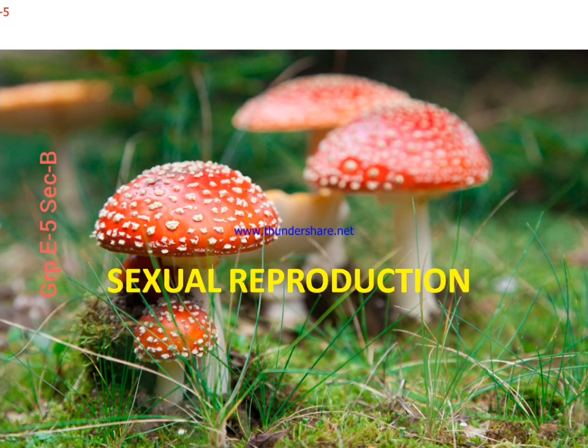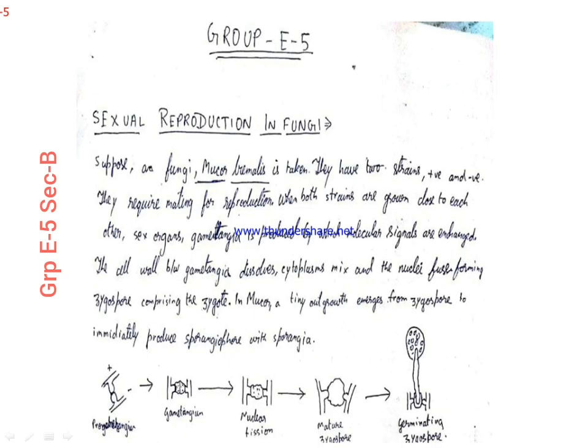Now we are going to discuss about sexual reproduction in fungi. A fungus such as Mucor hiemalis is taken, which has two strains, one positive and one negative. They require mating for reproduction. When both strains have grown close to each other, the sex organ that is the gametangium is produced, by which molecular signals are exchanged. The cell wall between gametangia dissolves, the cytoplasm mixes, and the nuclei fuse forming zygote spores comprising the zygote.